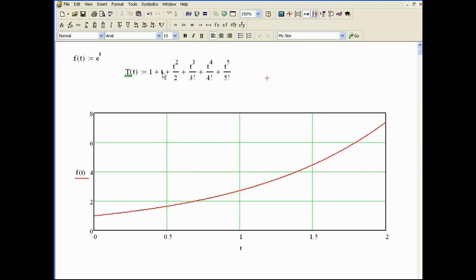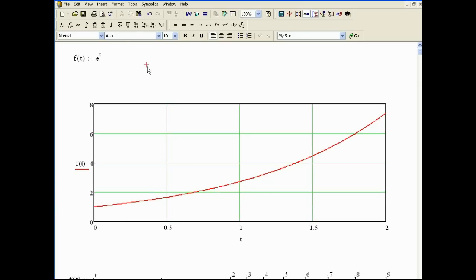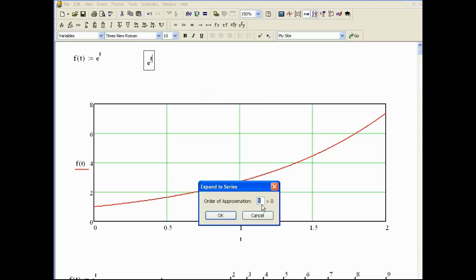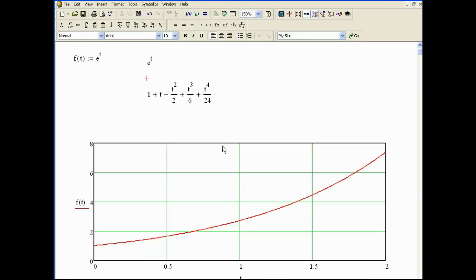So there we go. I'll get rid of that other trace. And let's do this. Say e to the t. Well, actually, let me back up one more here. If I have e to the t here, I can go to Symbolics, Variable, Expand to Series. And it's got five terms there. That's good. And there it is. There's all my five terms. The problem is it's just floating in space. It's not assigned to anything. So let's try this.